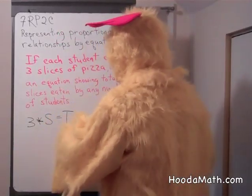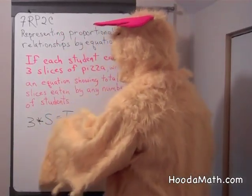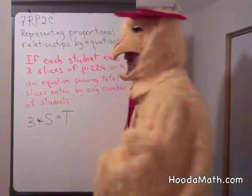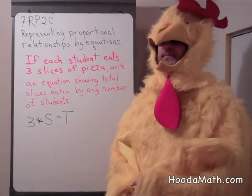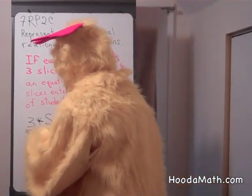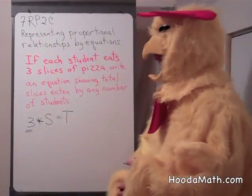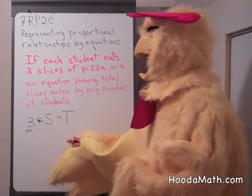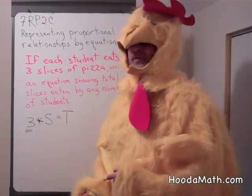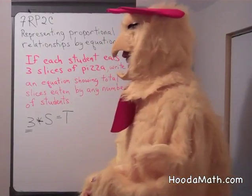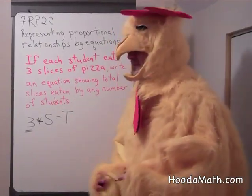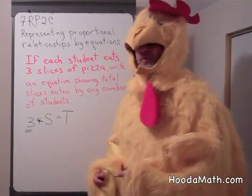So the total slices equal three times the number of students. Remember, the number that you multiply times the independent variable — the number of students in this case — will tell you what the total number is. This is the unit rate.